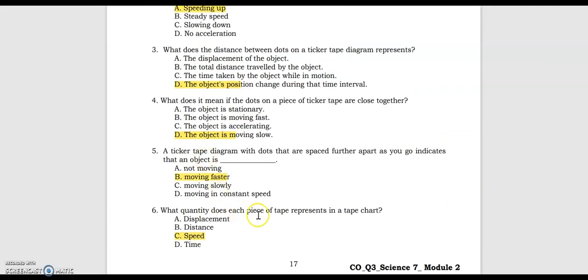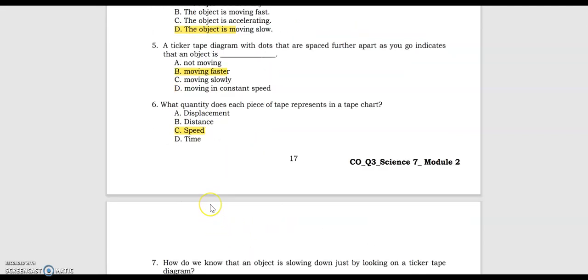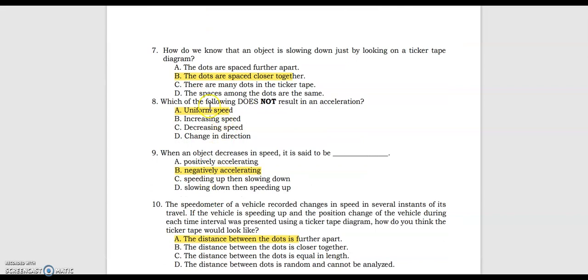Number 6, what quantity does each piece of tape represent in a tape chart? The answer is speed. Number 7, how do you know that an object is slowing down just by looking at a ticker tape diagram? The answer is the dots are spaced closer together. Number 8, which of the following does not result in acceleration? The answer is uniform speed.